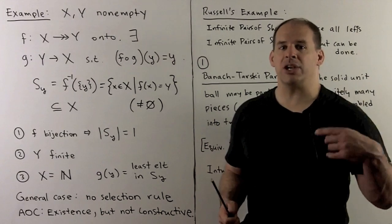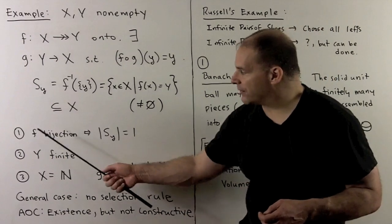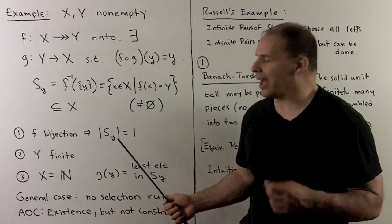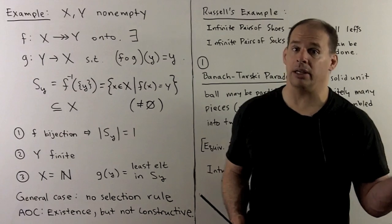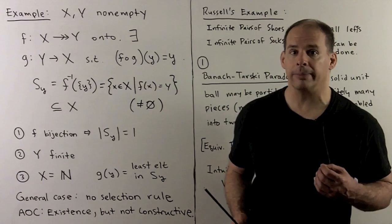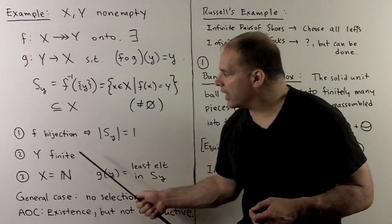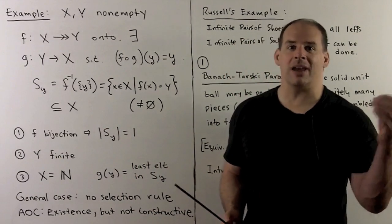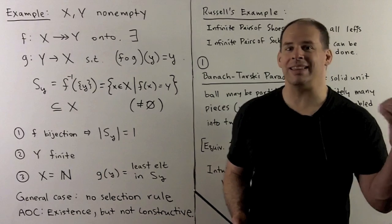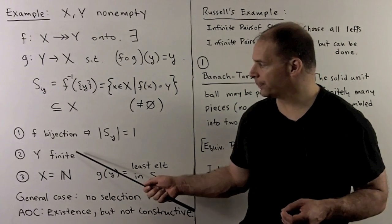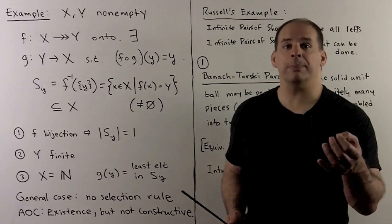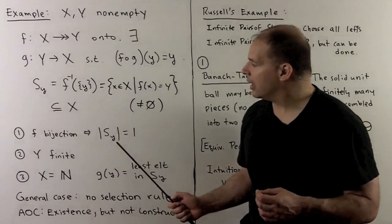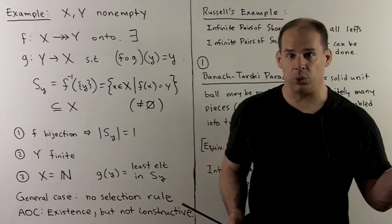Now, to get a feel for the axiom of choice, let's look at situations where we don't actually need it. If F is a bijection, there's only one element in each S_y, and the choice function is defined uniquely. If Y is finite, we only need to make a finite number of choices, then we get our choice function from the other ZF axioms. If Y is infinite but we have a selection rule, for instance if there are special properties about our sets, we can get around the axiom of choice.